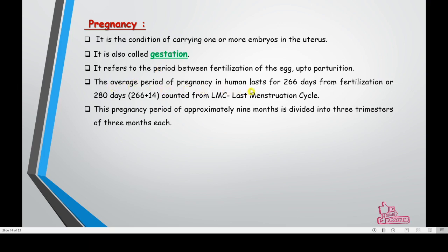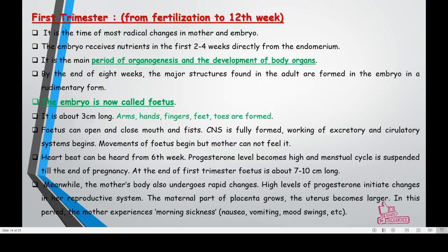The average period of pregnancy in humans lasts for 266 days from fertilization, or 280 days if calculated from the last menstruation cycle — 14 more days are counted. It is approximately nine months, which can be divided into three trimesters.